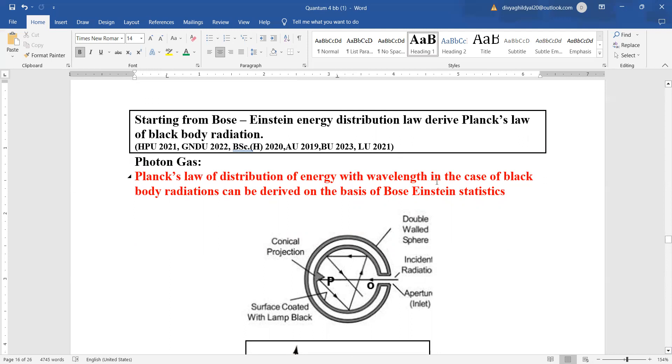Planck's law of distribution of energy with wavelength in the case of black body radiations can easily be derived with the help of Bose-Einstein statistics.